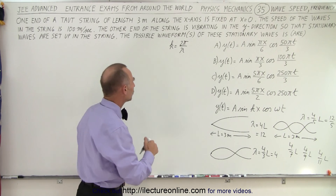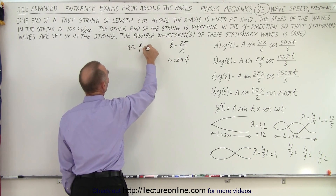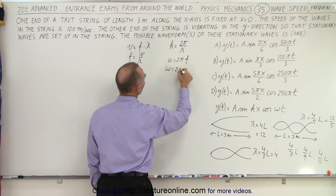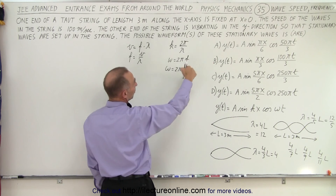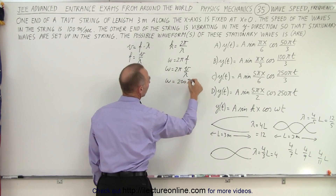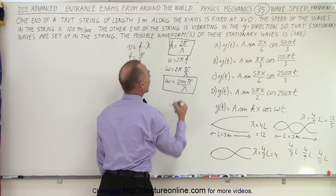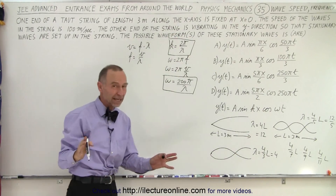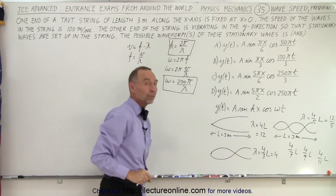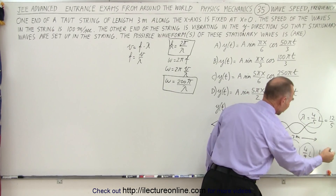Now we need to do the same for ω. Notice that ω equals 2πf, and velocity equals frequency times wavelength, so frequency equals V/λ. Therefore ω equals 2π times V/λ. Since V is 100 m/s, ω equals 200π/λ. So λ can be 4L, 4/3 L, 4/5 L, 4/7 L, 4/9 L, 4/11 L, and so forth — these define all possible ω and k values.